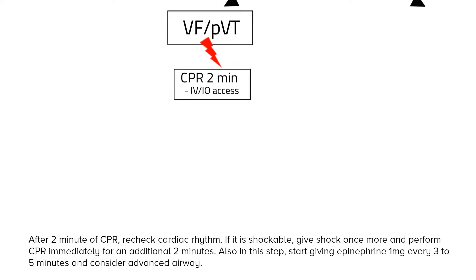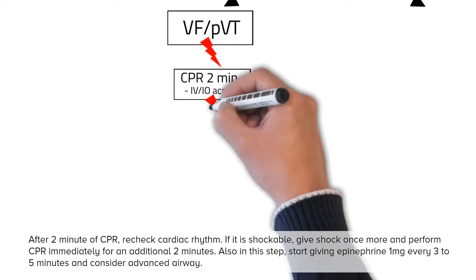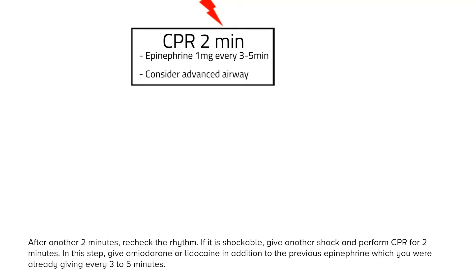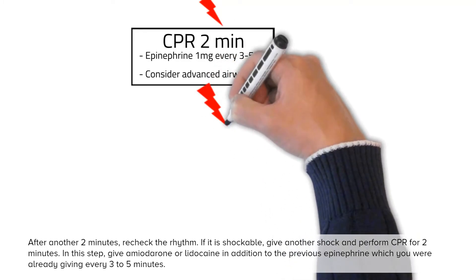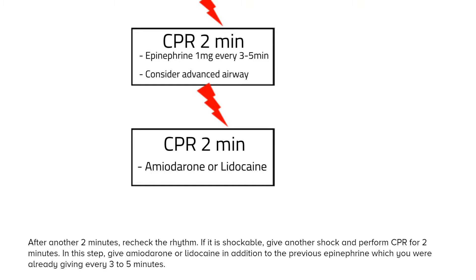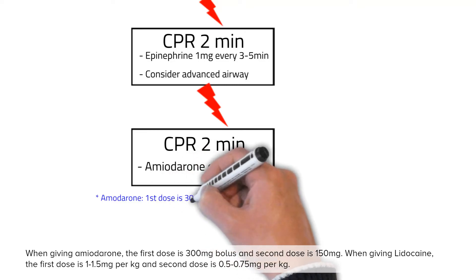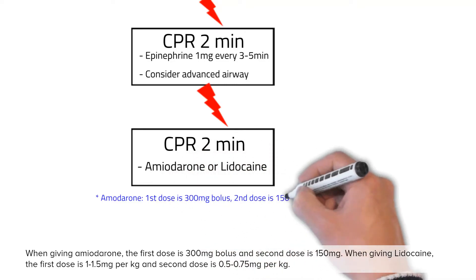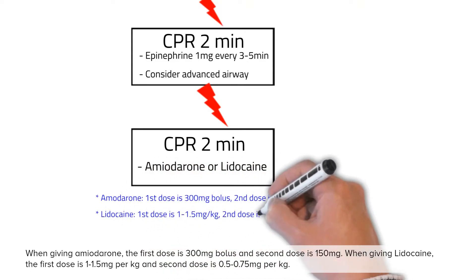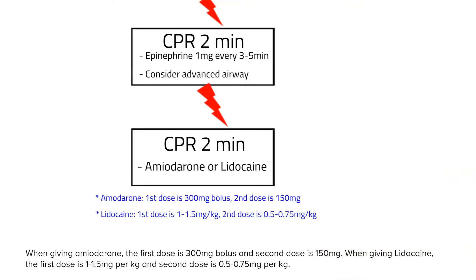After 2-minute CPR, recheck the cardiac rhythm. If it is still shockable, give another shock and perform CPR immediately for an additional 2 minutes. In this step, also start giving epinephrine 1 mg every 3–5 minutes and consider advanced airway. After another 2 minutes, recheck the rhythm. If still shockable, give another shock and perform CPR for 2 minutes, adding amiodarone — first dose 300 mg bolus, second dose 150 mg — or lidocaine, first dose 1–1.5 mg/kg, second dose 0.5–0.75 mg/kg, in addition to the ongoing epinephrine.